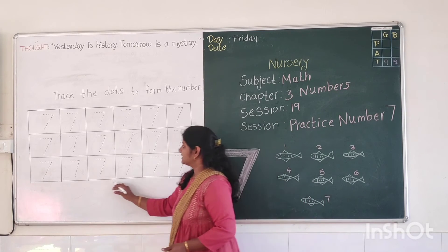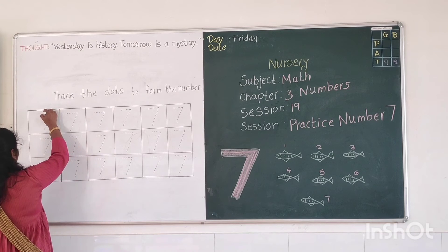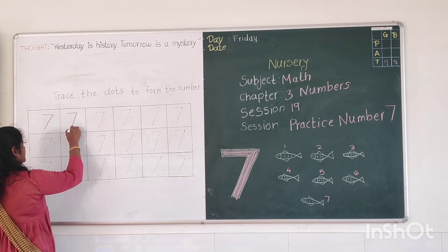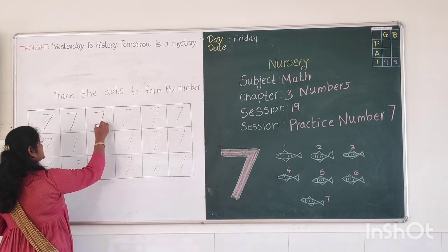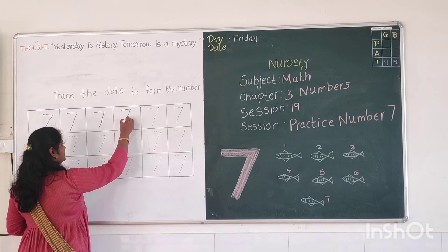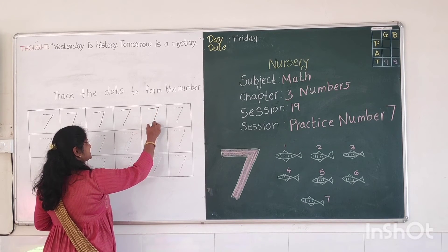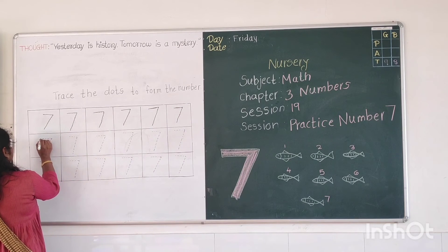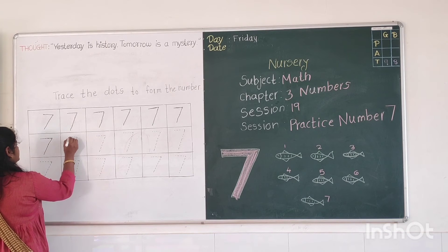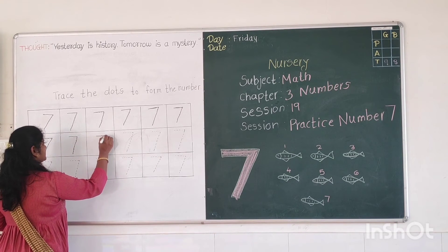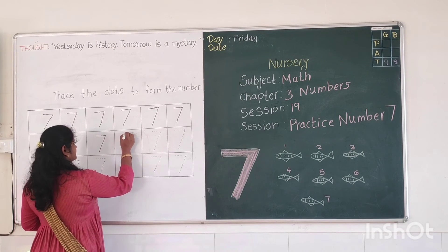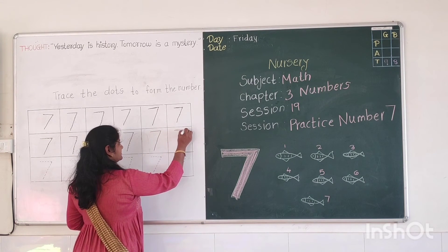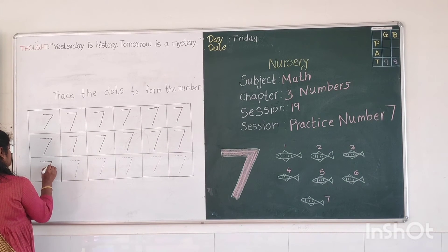Let's start. You have to take your pencil. Put it here. First slipping line, then slanty line. Slowly, slowly you have to trace the dot. This is number 7. Which number is this? Yes, number 7.